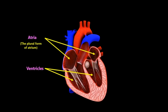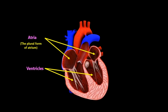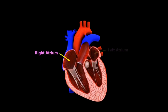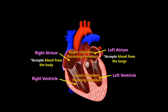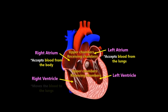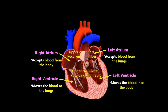Atria is the plural of atrium. The two upper chambers, called the left and right atria, are receiving chambers that accept blood from the body and from the lungs. The lower chambers, called ventricles, are pumping chambers. The right ventricle moves blood to the lungs, while the left ventricle moves blood into the body.